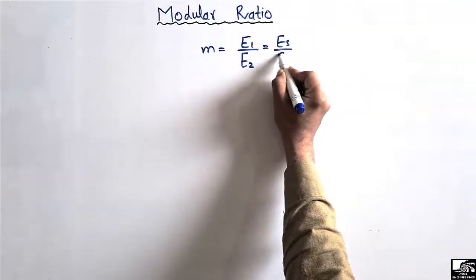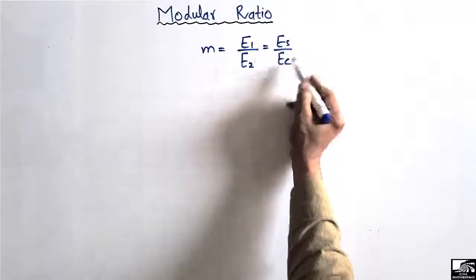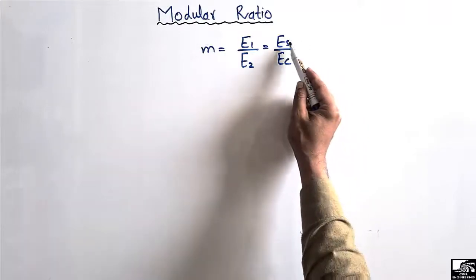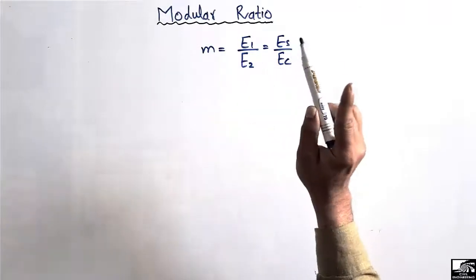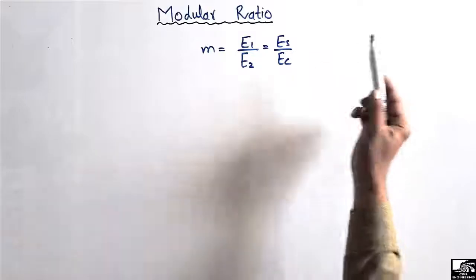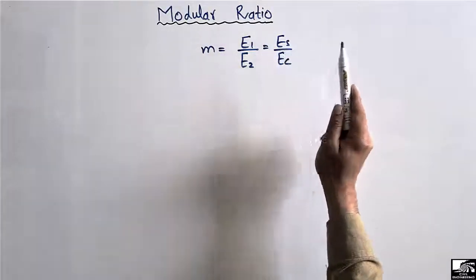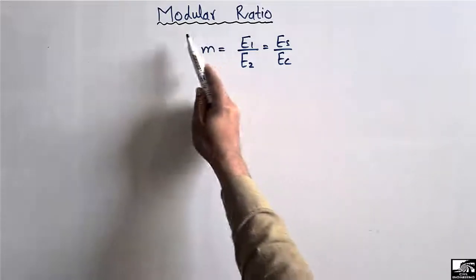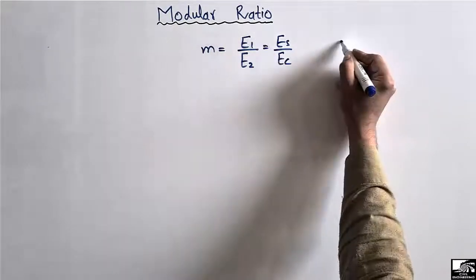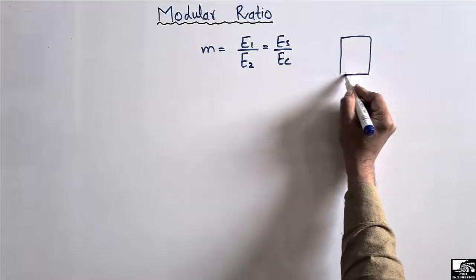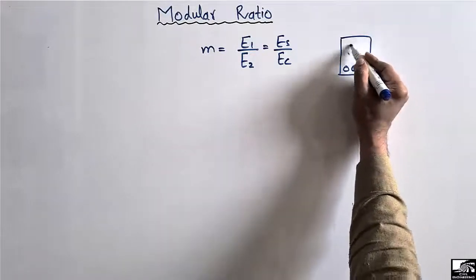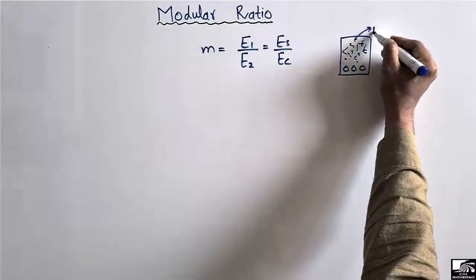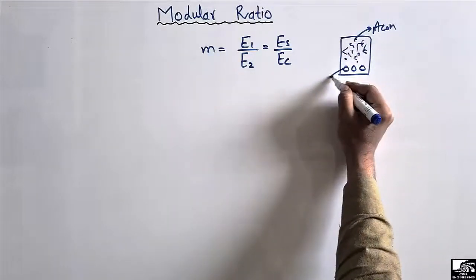The modular ratio is the ratio of the elasticity of steel to the elasticity of concrete. We use it to convert two different materials into one equivalent material. If we look at this beam section, it is made up of two materials — steel and concrete — with a corresponding area for each.